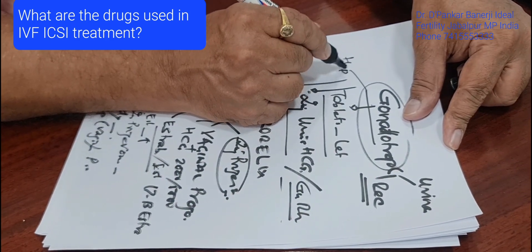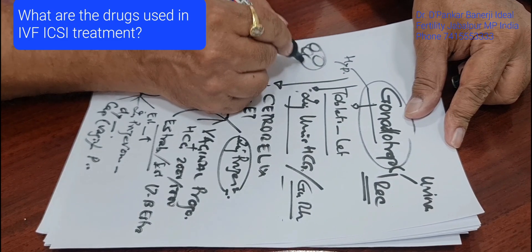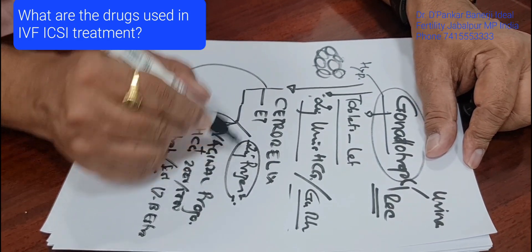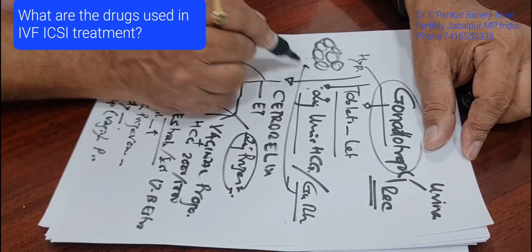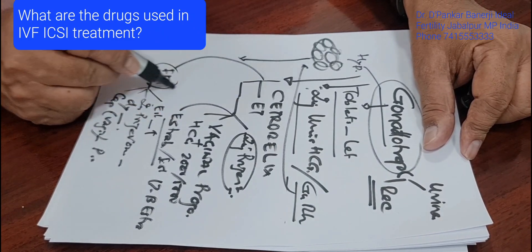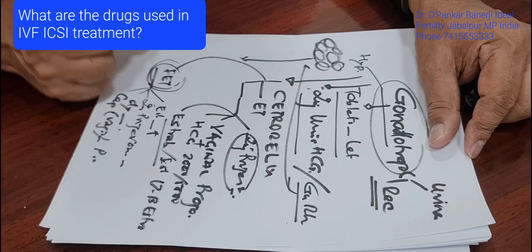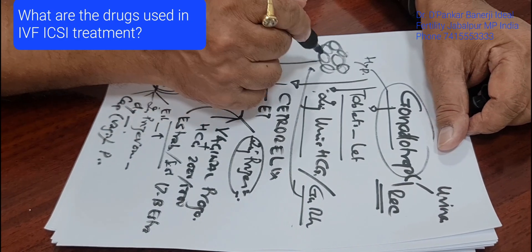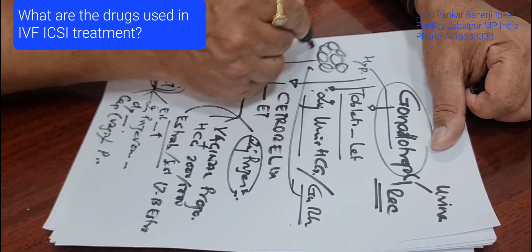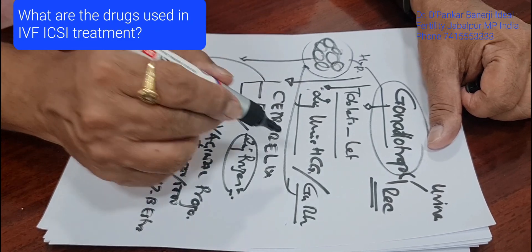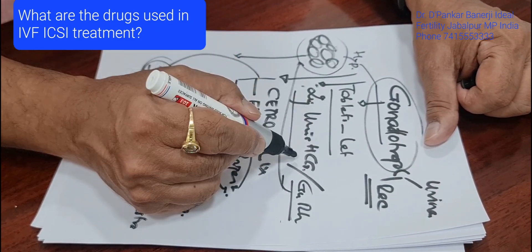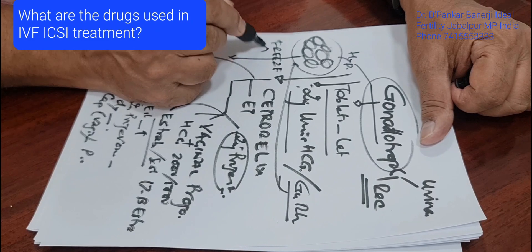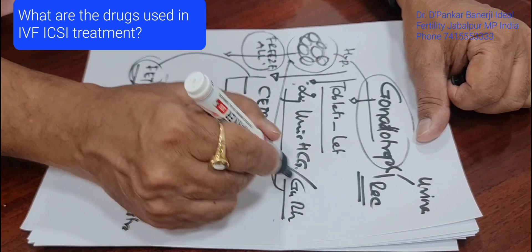The side effect of gonadotropins is sometimes hyperstimulation — meaning too many eggs — in younger patients with higher AMH. In these cases, we give the trigger with a GnRH analog and usually go for frozen embryo transfer. Sometimes this is not decided in advance, but if we feel there is a chance of ovarian hyperstimulation, we convert to a freeze-all approach.